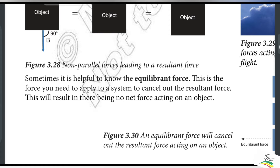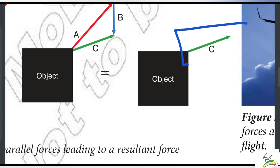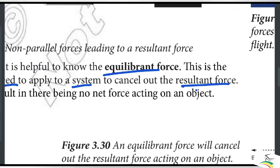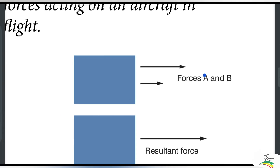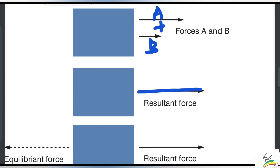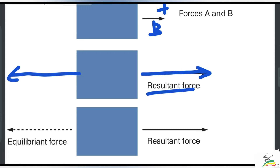Sometimes it is helpful to know the equilibrant force. What is the equilibrant force? The equilibrant force is the force you need to apply to a system to cancel out the resultant force. If you have a resultant force, you can cancel it out by applying an equal force in the opposite direction.